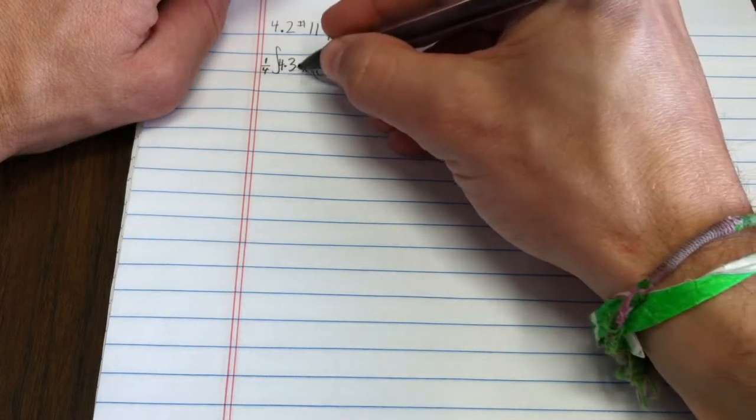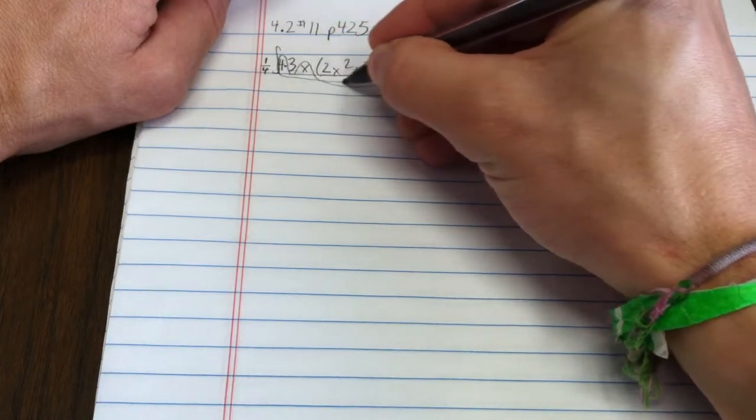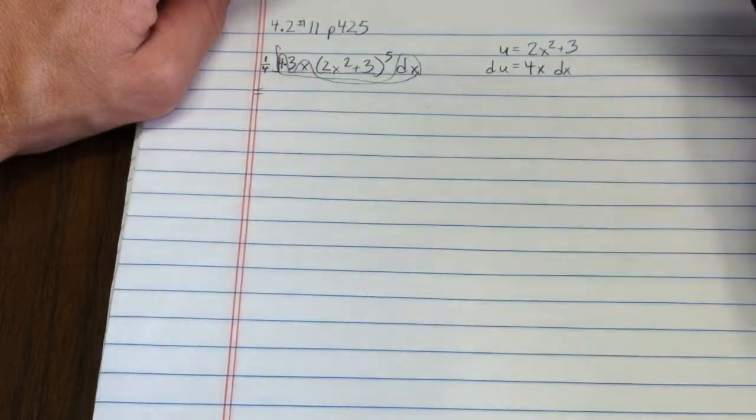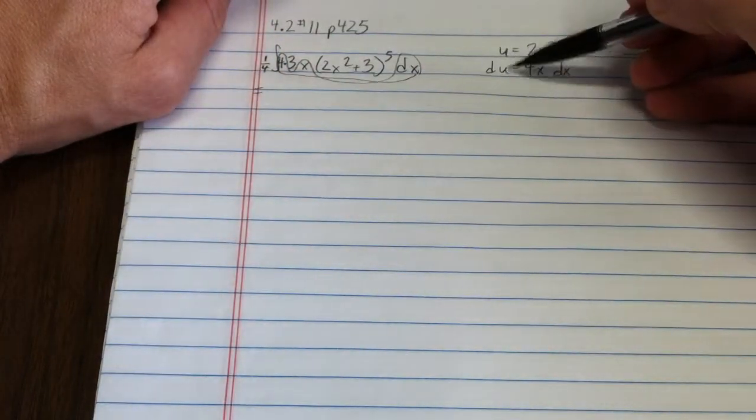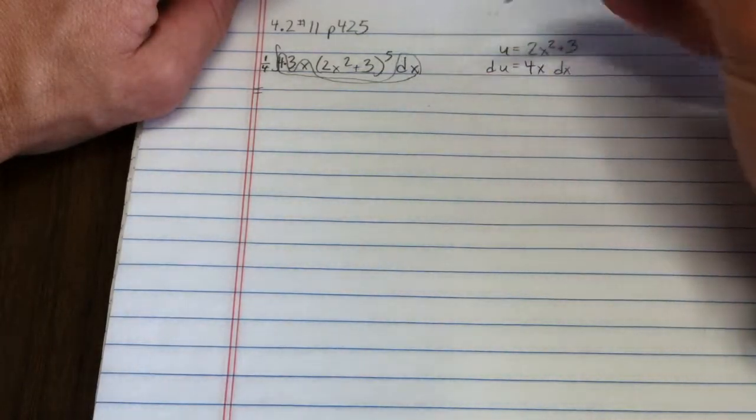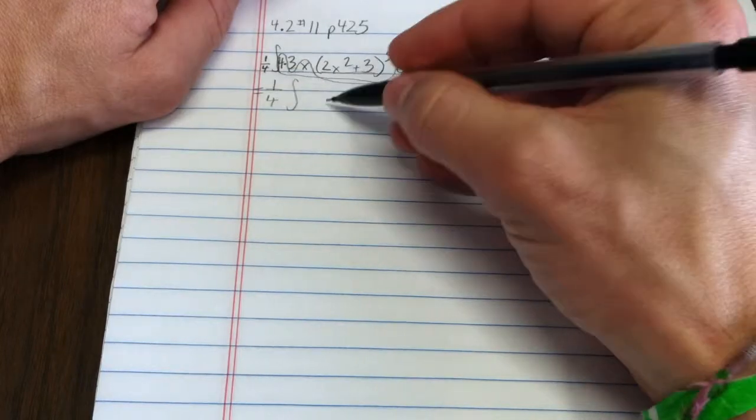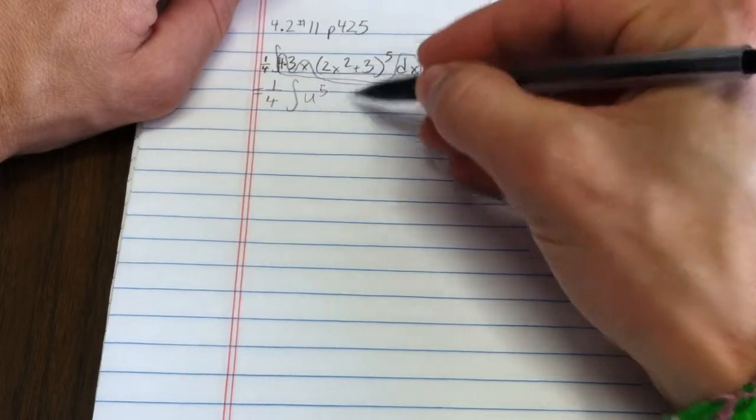Then, dx, x, and 4 all together. These terms commute. So, I could think about that as being my du. This is u to the 5th. And what I have here is 1 fourth integral of u to the 5th du.